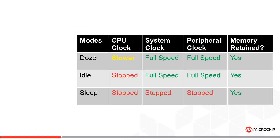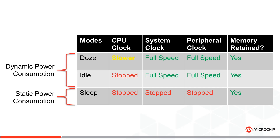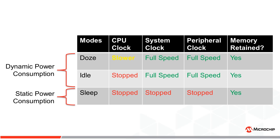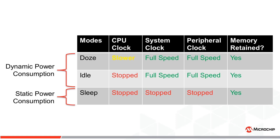There are three low power modes available for PIC microcontrollers: Doze, Idle, and Sleep mode. Power consumption in microcontrollers is generally categorized into two components: static power and dynamic power. Static power is the power consumed when the system clock is disabled and code is not running, whereas dynamic power is the power consumed when the system clock is active and code is being run. Both of these topics are crucial for low power design.